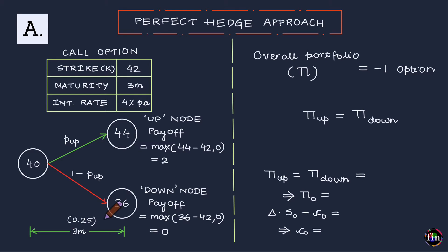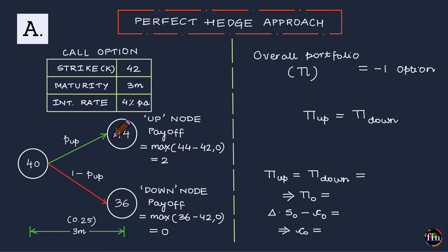Because the time step of this single period binomial tree exactly coincides with the maturity of the option, finding the value of the option at these two nodes is straightforward. If we land at the up node, the value of the European call equals the payoff, which is max(44 − 42, 0) = 2. The payoff in the down node is equal to 0. The task at hand is to find the value of this European call as of today's node.